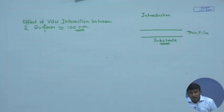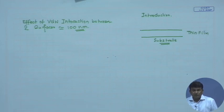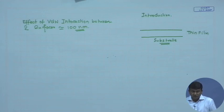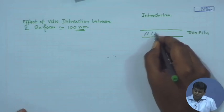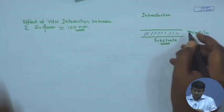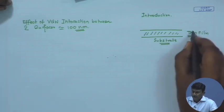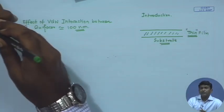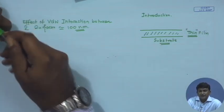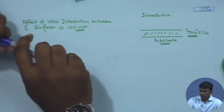Coatings are extremely important in a variety of settings: from your windscreen glass to non-stick cookware to spectacles — everything these days comes with a coating. So what happens in this film? The first question that should come to your mind involves this word 'thin.' What exactly is a thin film? How do you define it?